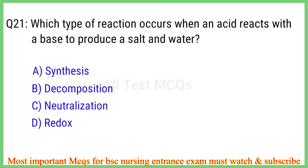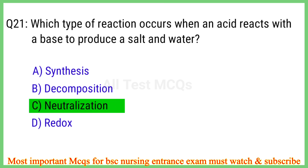Q21. Which type of reaction occurs when an acid reacts with a base to produce a salt and water? The right answer is option C: Neutralization.